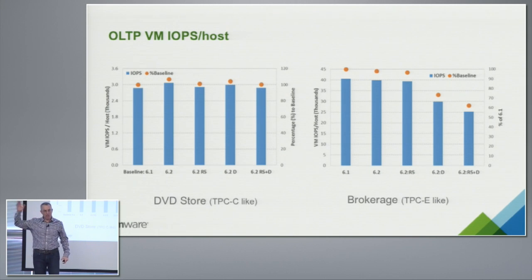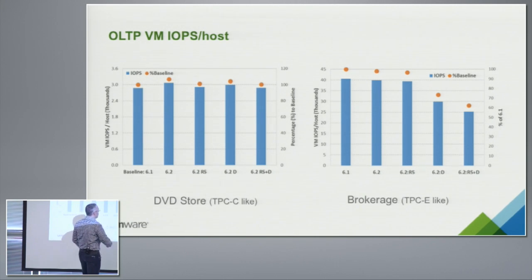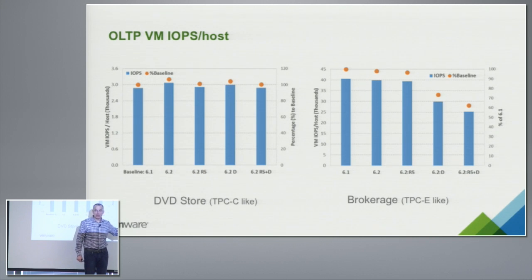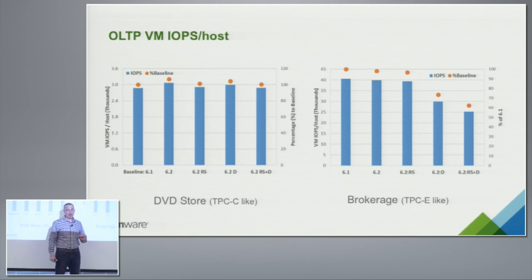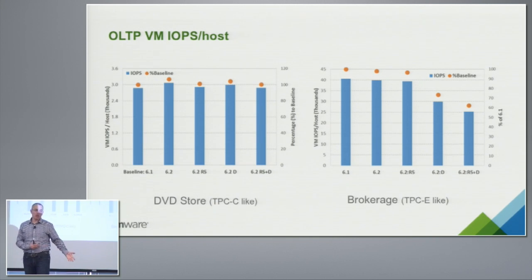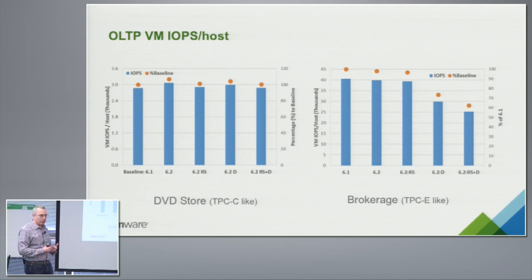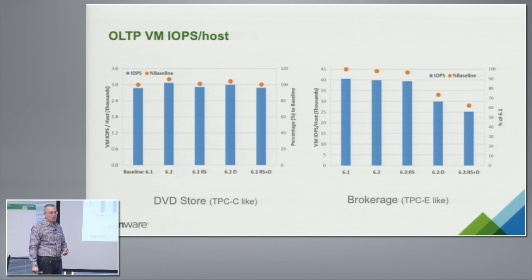In the case of the brokerage workload, with smaller IOs and higher IOPS per second, you see a noticeable difference — going from about 40,000 IOPS per host down to 25,000 IOPS per host with everything on, and we're not maxing out the system. Here, as an end user, I may make a decision about whether to turn on deduplication or RAID 5. It's not falling off a cliff, but it is falling. Deduplication looks like it has about a 25% penalty, and this workload is not very deduplicatable in this configuration.